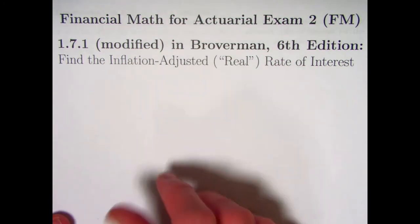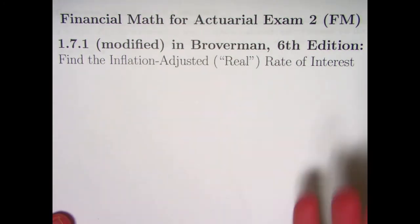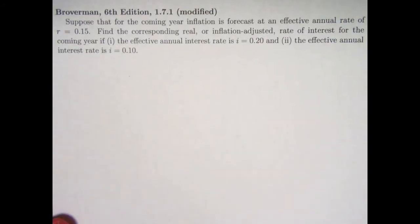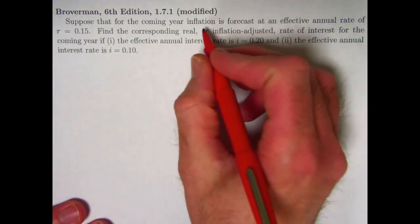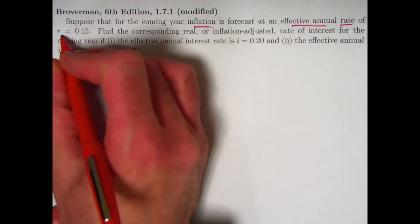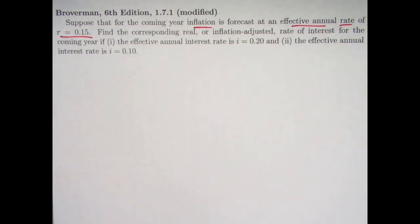Find the inflation adjusted or real rate of interest or rate of return. I did modify the problem a little bit. If you happen to have the book you'll see this is modified. We're gonna suppose for the coming year that inflation is forecast at an effective annual rate of 0.15 or 15 percent.